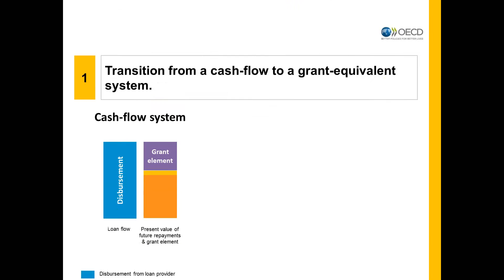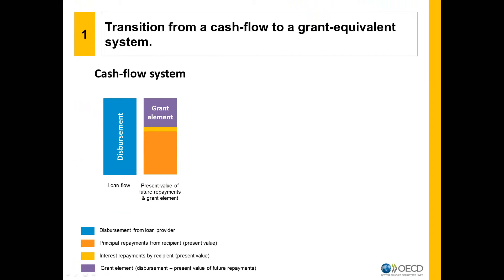In the current system, when a loan meets the minimum concessionality threshold — a grant element of at least 25% — the total amount of the loan, that is, the entire flow the recipient country receives, is included in ODA. Later on, as and when the recipient country reimburses a loan, repayments of principal count as negative ODA.